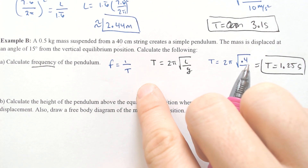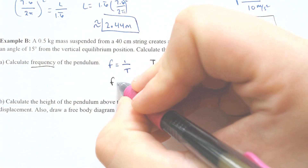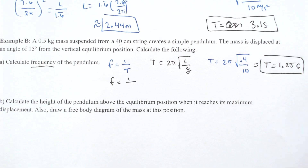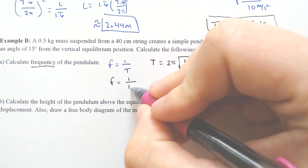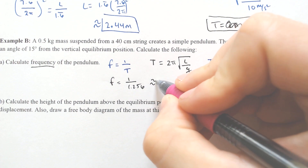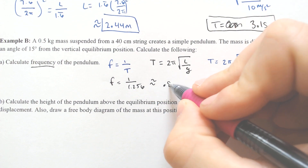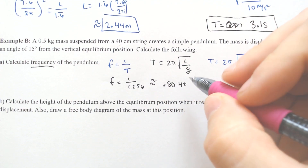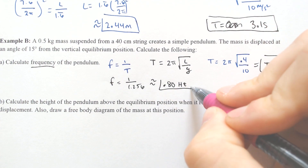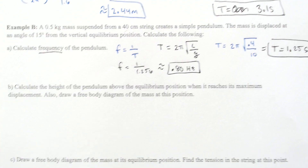If it has a period of 1.25 seconds, how many periods would occur in one second? It'd be a little bit less than one period per second. The frequency is 1 divided by 1.25, which gives a frequency of 0.8 hertz — meaning it does 0.8 periods per second.